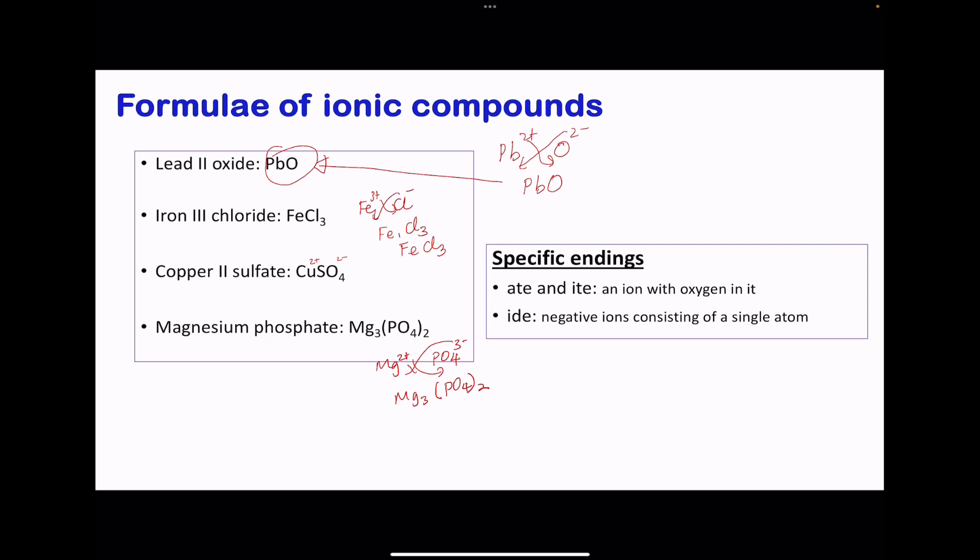We also need to look at specific endings like ate and ide. Ate appears if there is oxygen in that specific compound. If it's ide, it means this is a negative ion consisting of a single atom. For example, chloride, oxide, bromide, nitride. All those are going to be containing one single atom, while these ones are going to be containing oxygen, like carbonate, phosphate, sulfate. That can help you understand how these are named.